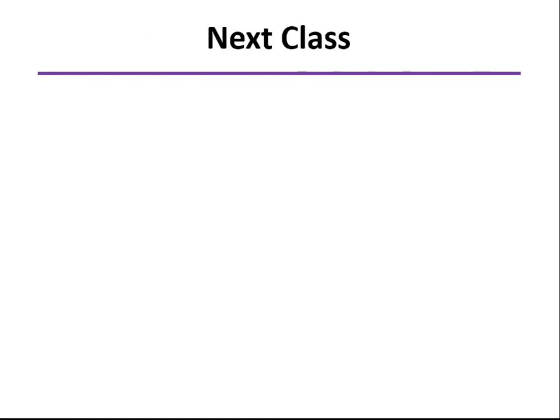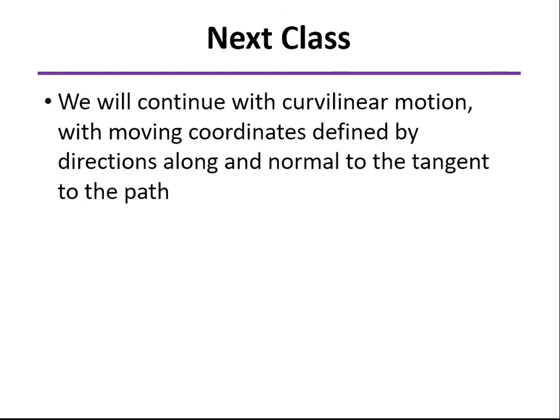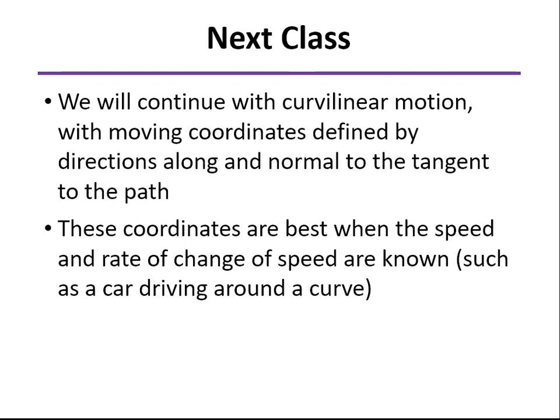So in the next class, we'll keep going with curvilinear motion, but we'll use a different coordinate system. We use ones that are along the normal and tangential to the path. So when you're driving around a curve, you know the speed, you know how fast you're going. And so your rate of change of speed would be acceleration in the tangential direction. And as we'll see, the acceleration will be back toward the center of curvature.